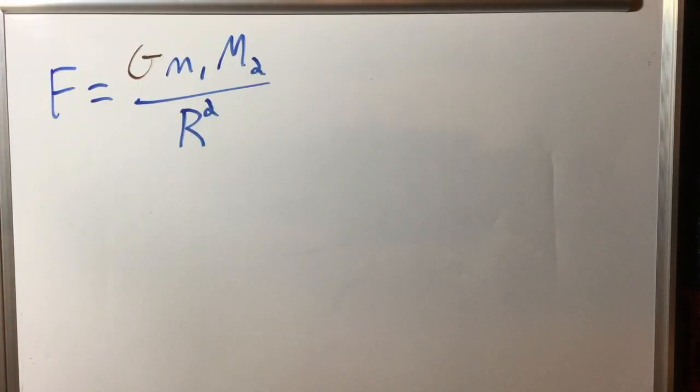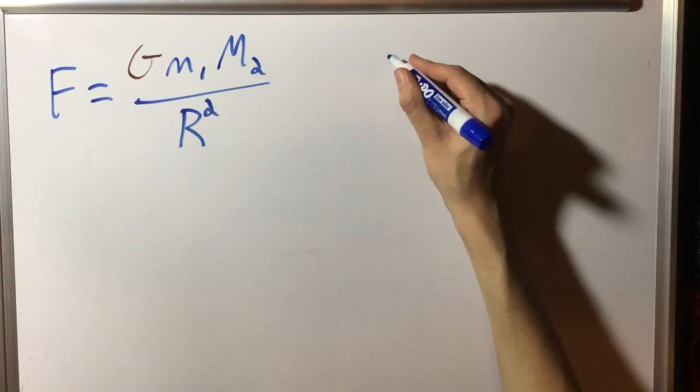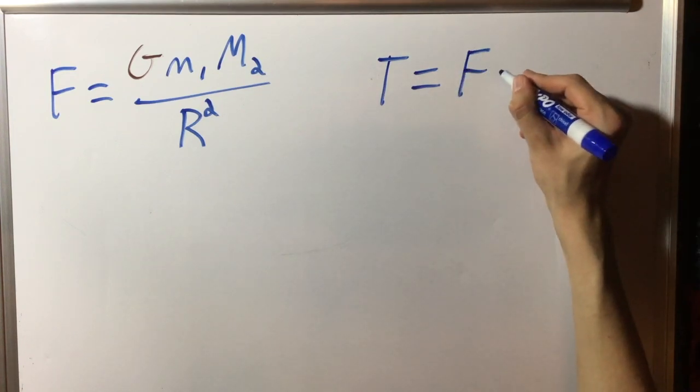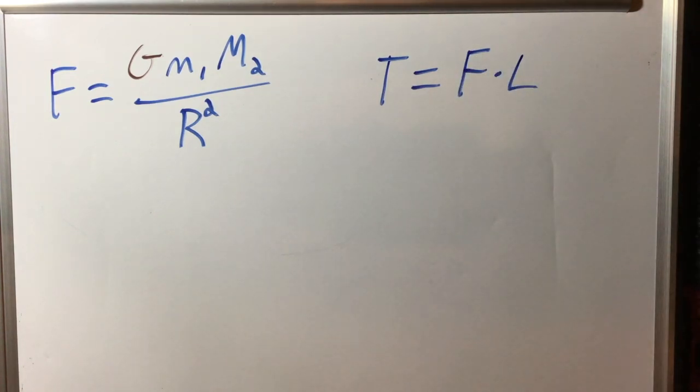Next, we find the force-torque relationship. This is defined by the formula tau is equal to FL, where tau is the torque, F is the gravitational force, and L is the total length of the bar.